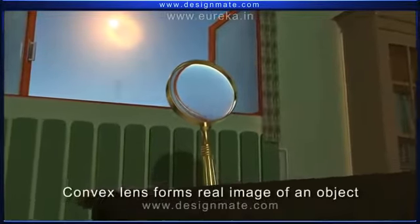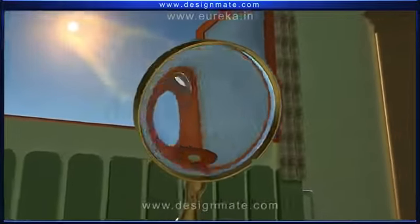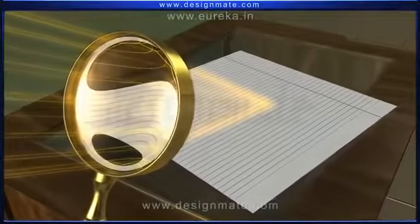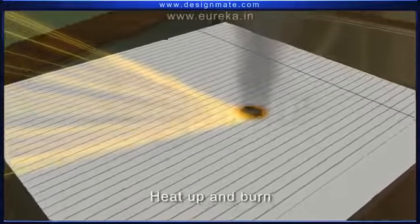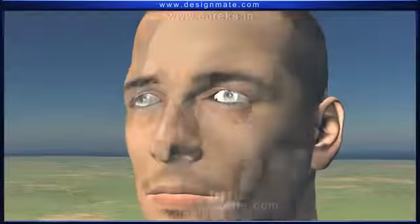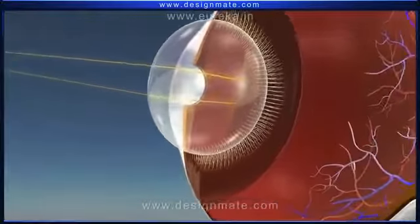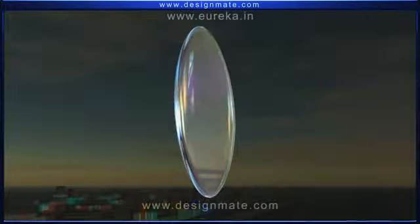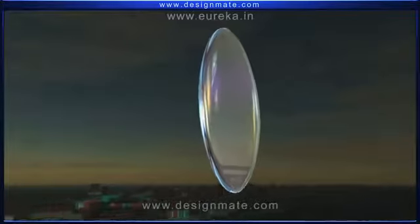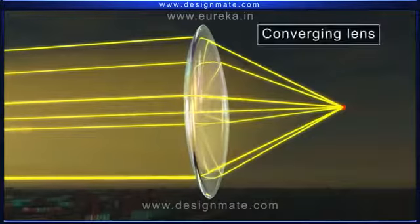The image formed by the convex lens in this case is a real image of an object. The convex lens can focus the light from the sun to a point on the other side of the lens. The concentration of light energy at this point causes the paper to heat up and burn. The lens in a human eye is convex in nature. We should not look at the sun directly, as it can damage our eyes permanently. Hence, we have understood that the rays of light incident on a convex lens get converged on the other side, so it can also be called a converging lens.